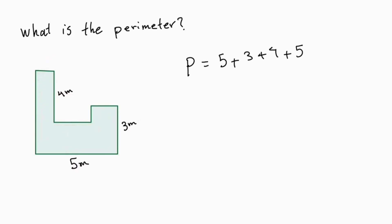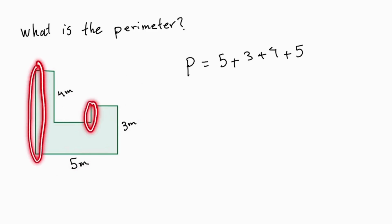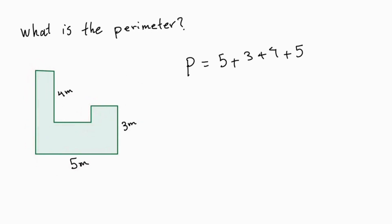So what's left? We are left with this side and this side, but we don't know the value of this. We can just name it x and let's see what happens. So if this is x, this also will be x.